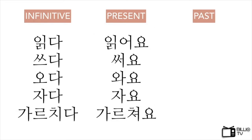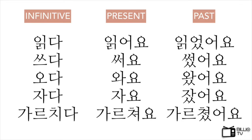Here are other verbs to practice. You can pause the video for a while and guess the answers. 읽어요 becomes 읽었어요. 써요 becomes 썼어요. 와요 becomes 왔어요. 자요 becomes 잤어요. And 가르쳐요 becomes 가르쳤어요.